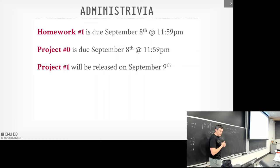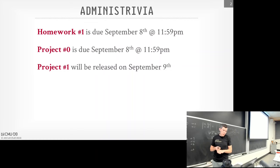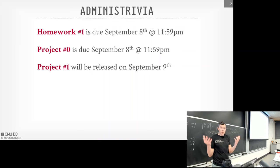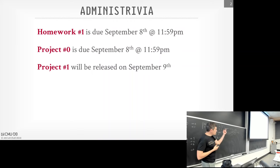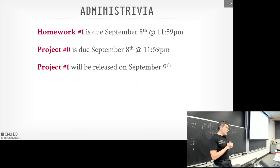Starting next week, on Monday or maybe Tuesday, we'll release project one, which is actually for a grade. This will be implementing a buffer pool manager, which we'll cover in a few lectures. By now, since you completed project zero, you've already set up your development environment to write code locally, so you can start banging on the code right away. Any quick questions about homework one or project zero? Good — I'm glad nobody has waited that late.